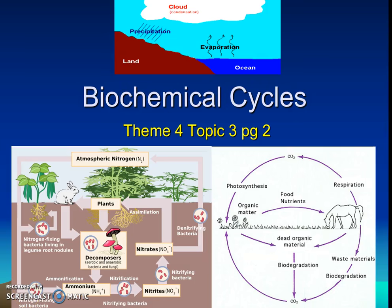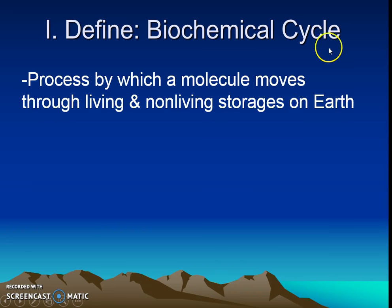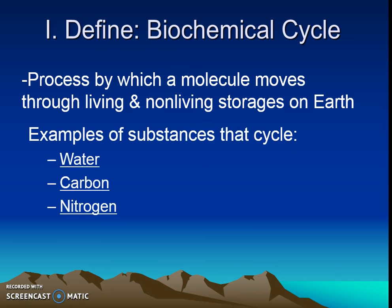Hello biology students, we're going to do biochemical cycles, also known as nutrient cycles. A biochemical cycle or nutrient cycle is a process by which a molecule will move through the living and non-living storages on earth. Since it's a cycle, it's going to go around and around over and over again.